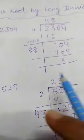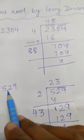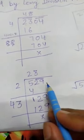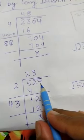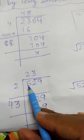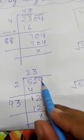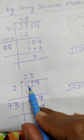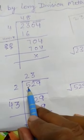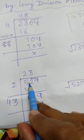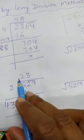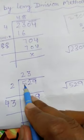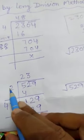Now one more example. We have to find the square root of 529. We make pairs from the last digits: 29 forms one pair and 5 is a single digit with no pair. We check squares: 1×1=1, 2×2=4, 3×3=9. Since 9 is greater than 5, we use 2.